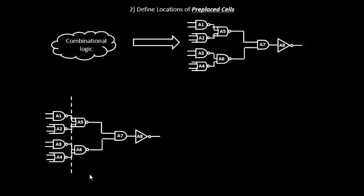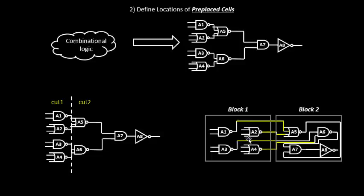We cut this circuit into two parts — two separate sections. When they are connected together they perform some function, but now we separate them out. We have cut one and cut two, along with the connectivity information. For example, a1 is connected to a5, the output of a4 goes to a6 — these are two different blocks.